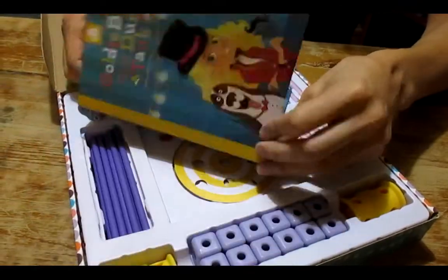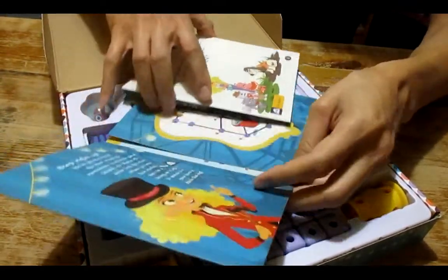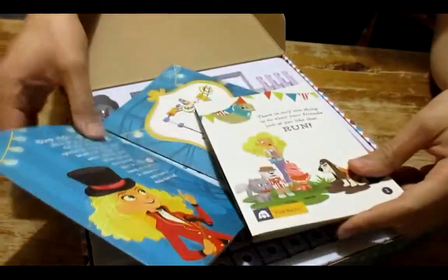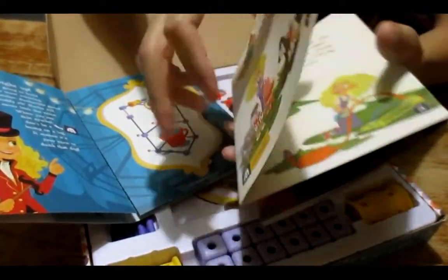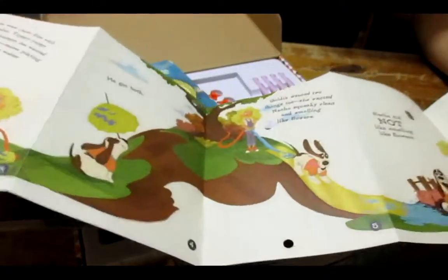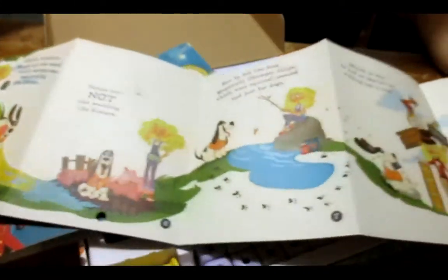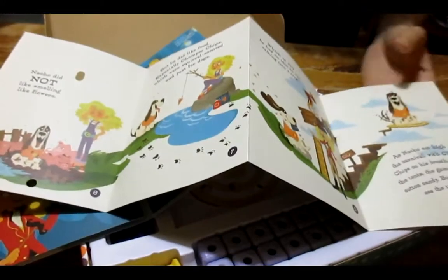It comes with this really colorful little book and this comes out. So this is a storybook, which is the first thing that they find. It's very colorful and they can read right along. There's a nice little story to go along with the set.